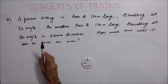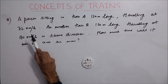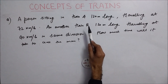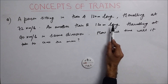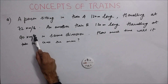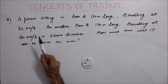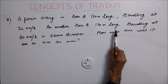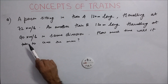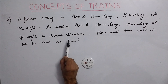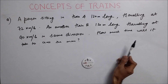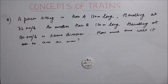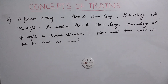Now try to solve this problem on your own: a person sitting in train A, which is 120 meters long travelling at 72 km per hour, and another train B, 150 meters long travelling at 90 km per hour in the same direction — how much time will it take to cross? For any queries please comment, and thank you for watching. Please like this video and subscribe for more videos.